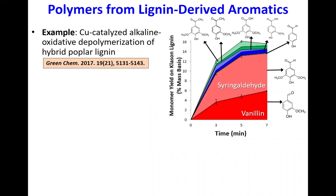One way to depolymerize lignin is catalytic oxidation. In a paper we published a few years ago, we depolymerized lignins derived from a hybrid poplar using an alkaline pretreatment process. The yield of compounds from lignin is typically very low, depending on lignin properties, source, and prior processing history. One of the main compounds produced is vanillin — the compound in vanilla. At one time up until the 1980s, around 80 percent of the world's artificial vanilla was produced at a paper mill in Canada.